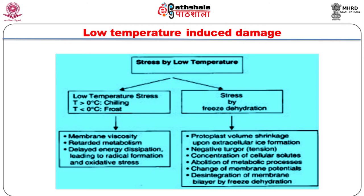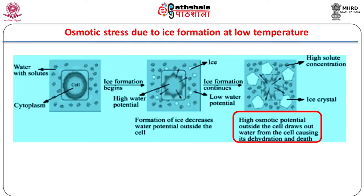Freezing imposes dehydration stress due to reduced water uptake by roots and an inability to close stomata. Ice formation takes place outside cells, causing a decrease in water potential outside cells. This causes water from the cell to flow outside, causing dehydration-induced damage to cells. Therefore, the main cause of frost damage to plants in nature is extracellular ice crystal formation that causes secondary water stress to the surrounding cells.